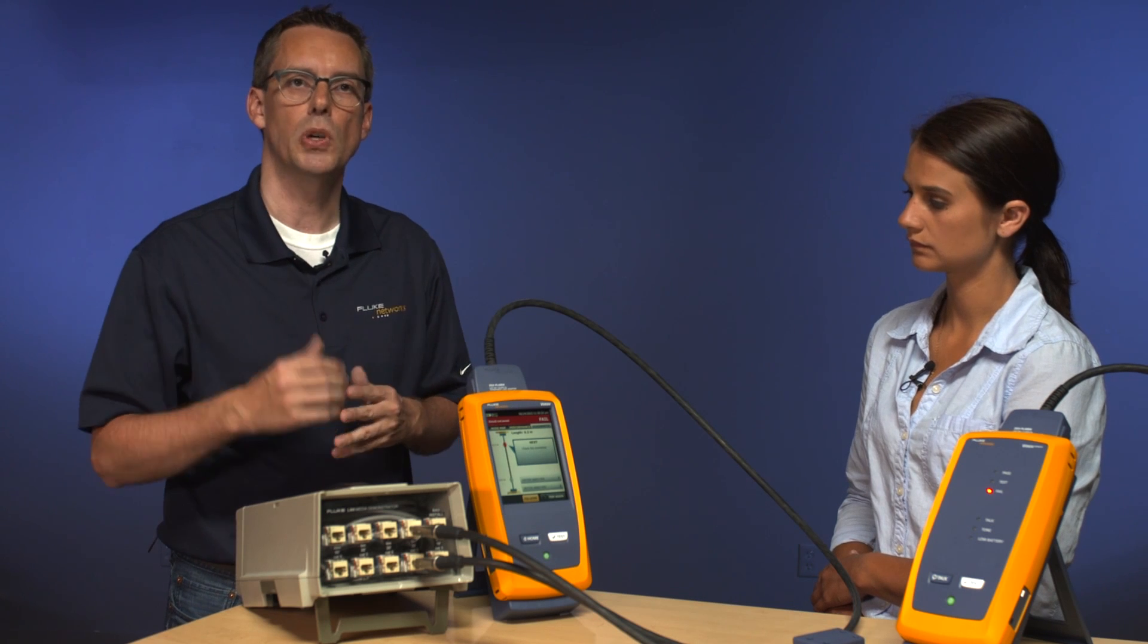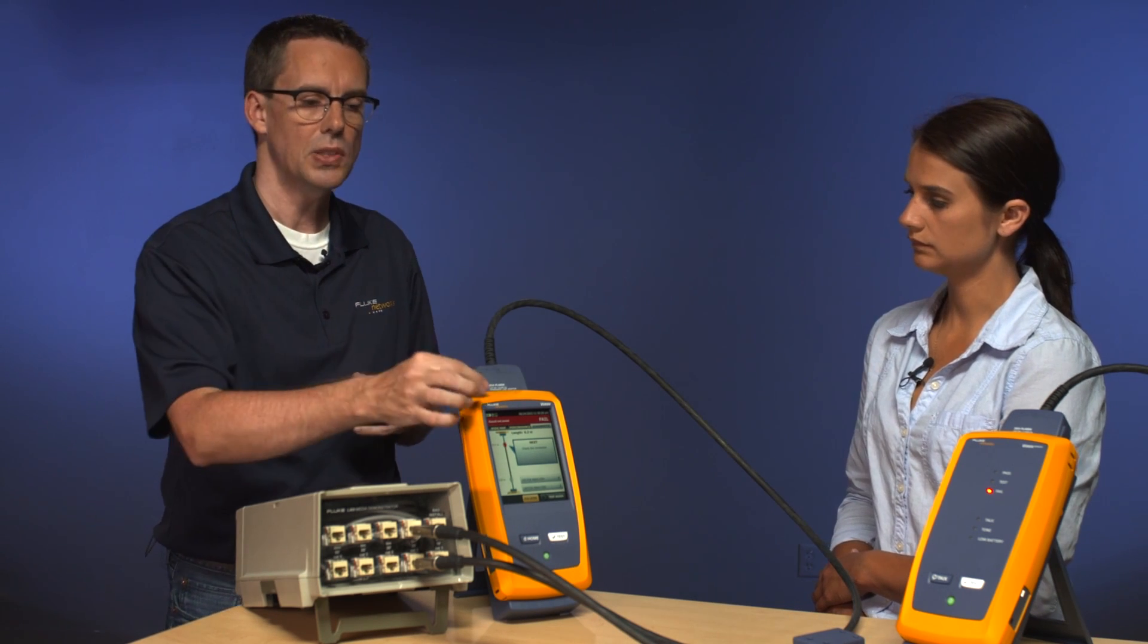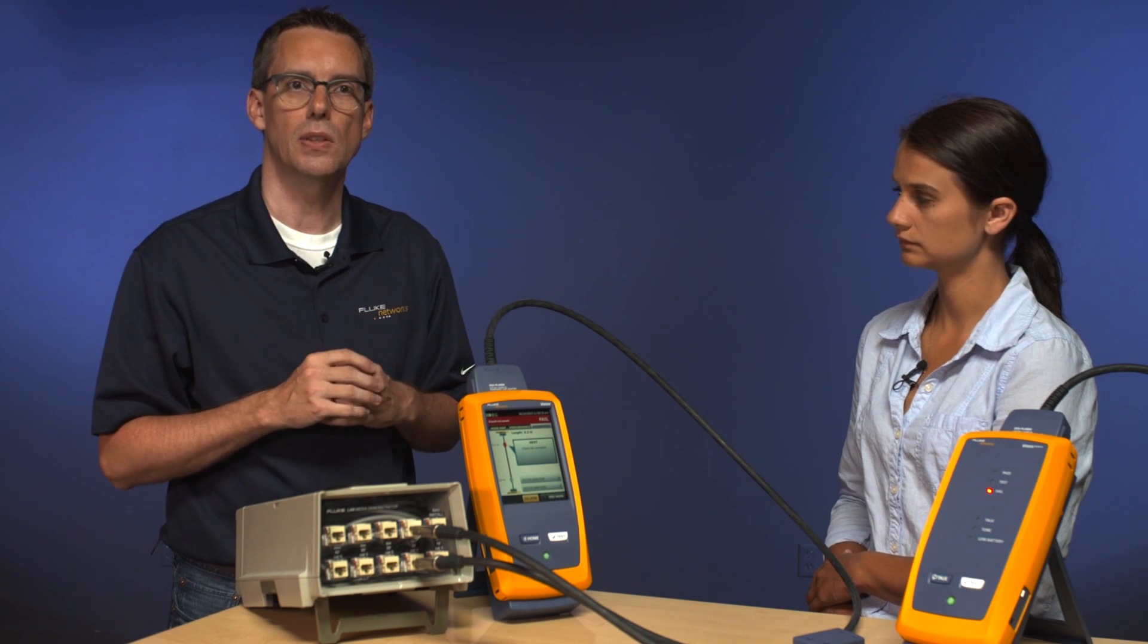This tester is smart enough that it can actually locate RJ45 connections in the link. So if you had a consolidation point, you'd actually see three connectors on the screen here. What the tester is telling us is the connection at the far end is bad and it needs fixing.